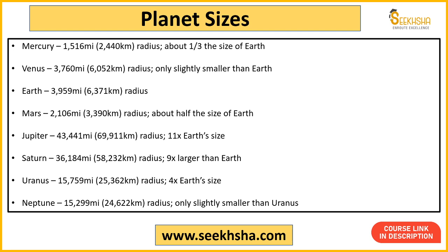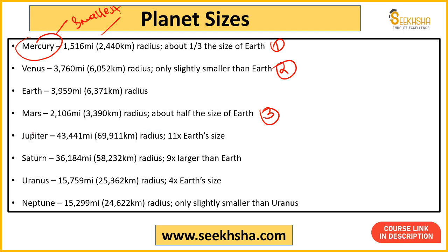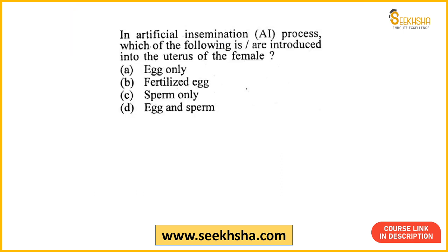Alag-alag tariqe se chizein yaad rakhni padegi. Agar aapse pucha jaaye ki Earth size wise solar system mein konse number pe aata hai, toh dekho Earth se kitne planets chote hain: Mercury, Venus, Mars — teen planets Earth se chote hain, yaani Earth fourth number pe aata hai size ke andar. Sabse chota planet Mercury hota hai. Sabse bada planet Jupiter hota hai. Yeh kuch cheezein hain jo aapne dhyan mein rakhni hai.